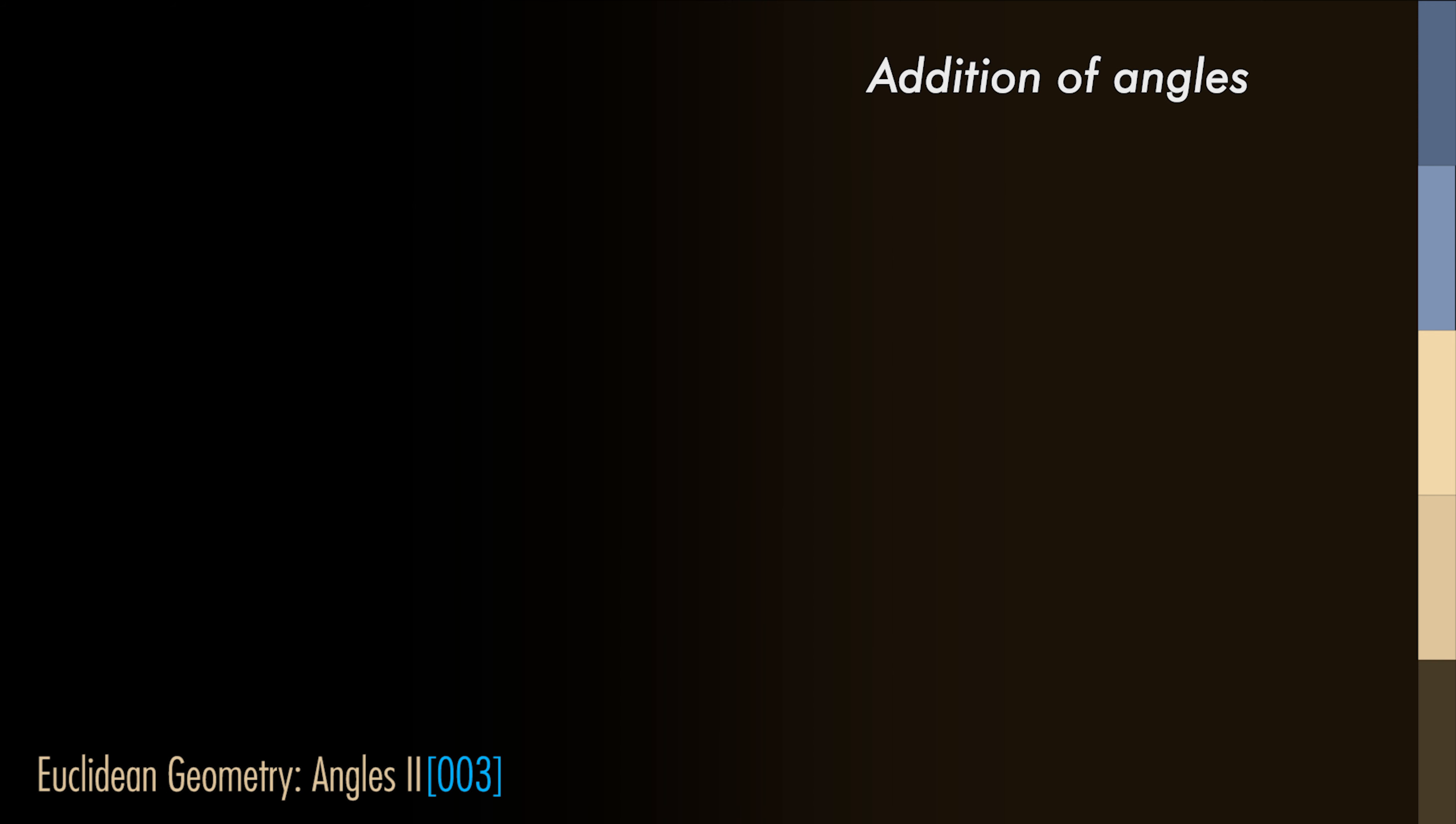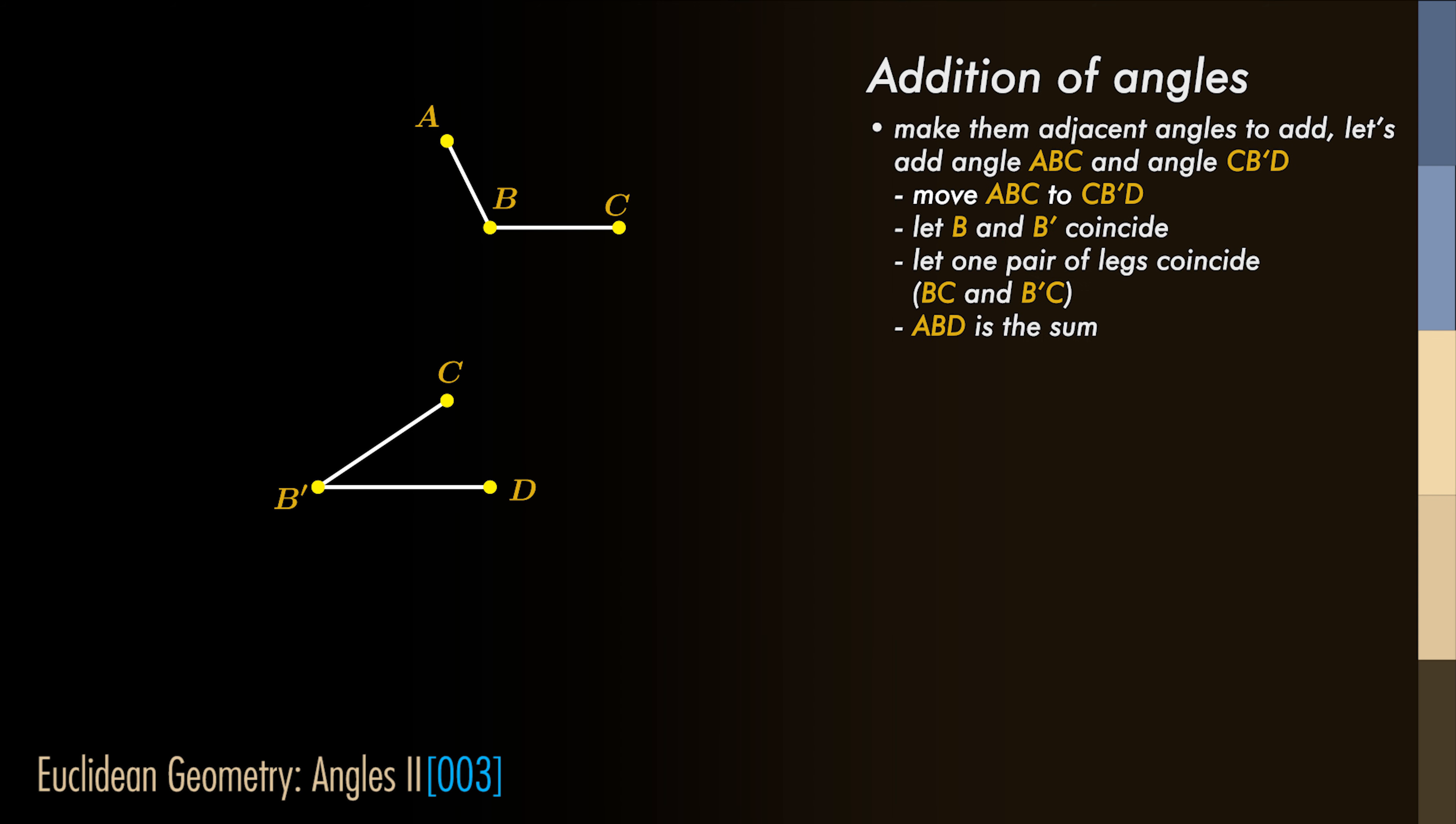We can add angles together. This is done by making them adjacent angles. Take for instance two angles, ABC and CB'D.